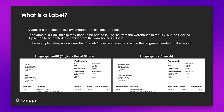A label is often used to display language translations for a text. For example, a packing slip may need to be printed in English from the warehouse in the UK, but the packing slip needs to be printed in Spanish from the warehouse in Spain. In the example below, we can see that labels have been used to change the language needed on the report.